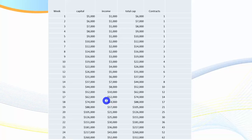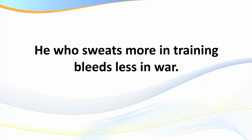A poor person is not someone without a cent, but someone without a dream. You've got to have a compelling future and a target. Your target may be $100 a day or $300 a day net per contract — whatever it is, you need to have a target. I really want you to sit down and jot down what your daily target is.